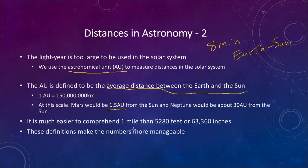Instead of comparing planets by distances in kilometers, we can compare them directly to the Earth using astronomical units. Mars would be 1.5 astronomical units from the Earth; Neptune would be about 30 astronomical units. It's much easier to comprehend 1.5 and 30 than those distances in kilometers. As an example in the English system: one mile is easier to think about than 5,280 feet or 63,360 inches — all correct, but much less manageable. Using the astronomical unit and light year makes the numbers in astronomy much more manageable.